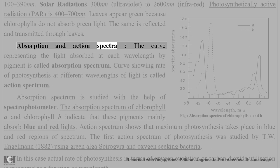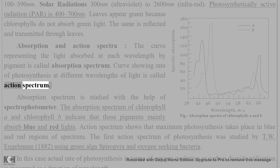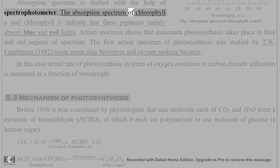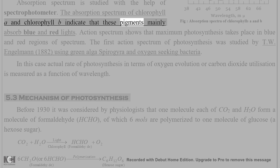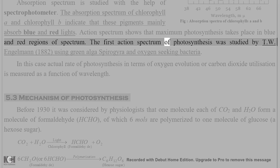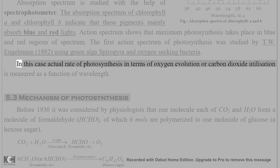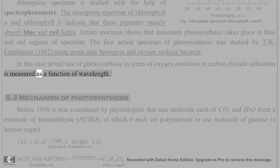The curve representing the light absorbed at each wavelength by a pigment is called the absorption spectrum, and is studied with a spectrophotometer. The curve showing the rate of photosynthesis at different wavelengths of light is called the action spectrum. The absorption spectrum of chlorophyll a and chlorophyll b indicates that these pigments mainly absorb blue and red light. Action spectrum shows that maximum photosynthesis takes place in the blue and red regions. The first action spectrum of photosynthesis was studied by T.W. Engelman (1882) using the green alga Spirogyra and oxygen-seeking bacteria, measuring the actual rate of photosynthesis in terms of oxygen evolution or carbon dioxide utilization as a function of wavelength.